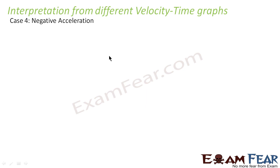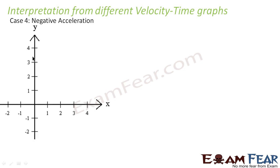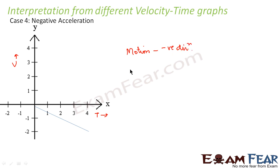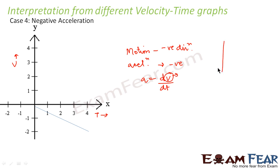Now let us look at the last scenario where we have negative acceleration. Here we see that the motion of the particle takes place in the negative coordinate. As time increases from 1, 2, 3, 4 and so on, the velocity goes in the negative direction, meaning the motion takes place in the negative direction. Therefore the acceleration will be negative. Because acceleration is nothing but dv/dt — so if v is negative, then dv/dt will also be negative.